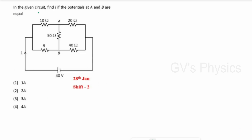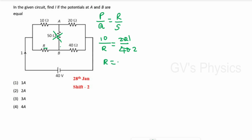Fifth question: In the given circuit, potentials at A and B are equal — find the current I. The circuit is a Wheatstone bridge. Since A and B are at equal potential, no current flows through the 50 ohm resistor. Using the balance condition P/Q = R/S: 10/R = 20/40, giving 10/R = 1/2, so R = 20 ohm.